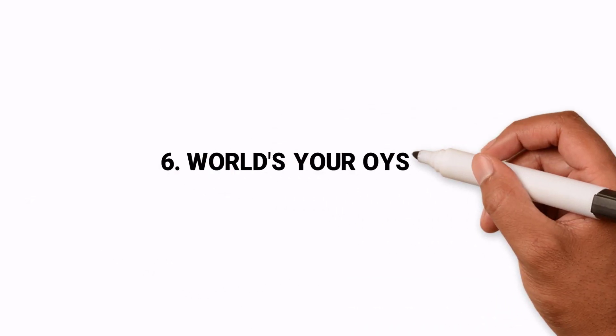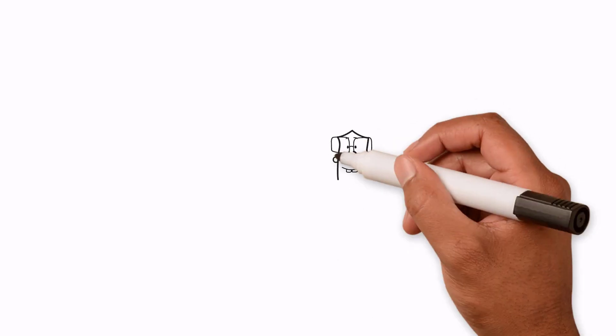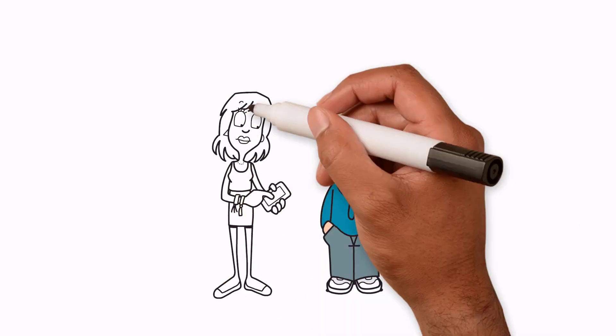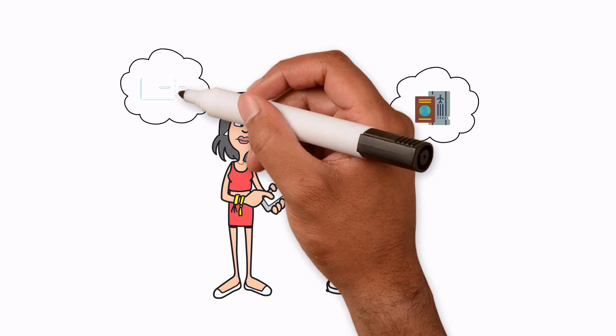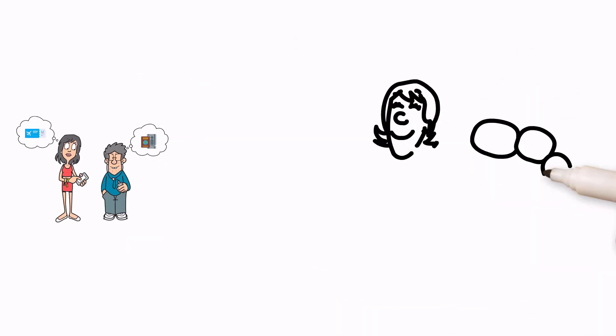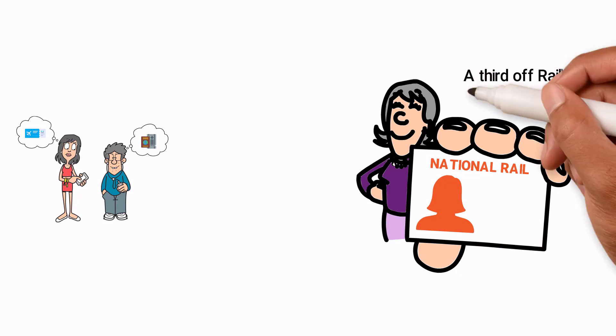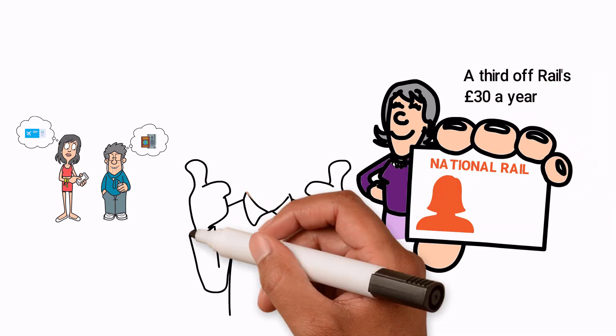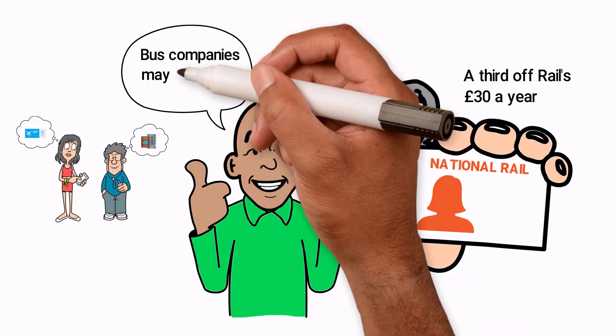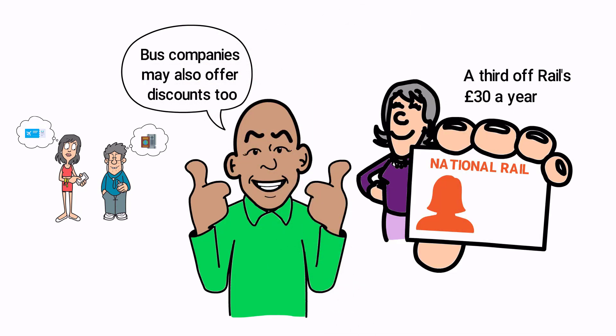World's your oyster. If you're in your late teens or early twenties, check out travel cards for some great savings. National Rail's 16 to 25 Rail card, for example, will give you a third off rail fares for £30 a year. It's a great deal. Bus companies may also offer discounts too, so do your research.